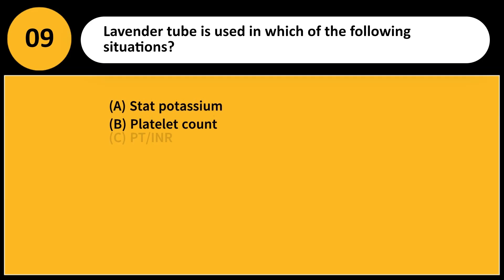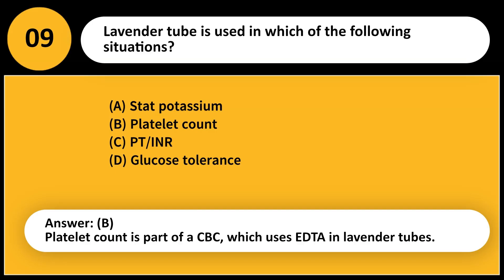Lavender tube is used in which of the following situations? A. Stat potassium. B. Platelet count. C. PT/INR. D. Glucose tolerance. Answer: B. Platelet count is part of a CBC, which uses EDTA in lavender tubes.